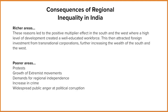Looking at the consequences of this inequality: for the richer areas, there is a positive multiplier effect. They've got more GDP, which means more money to spend on services and infrastructure, which generally leads to better education and health, meaning people can do more work, which brings in more money, which then brings better services, better healthcare, and better transport. This cycle continues because of the high GDP.